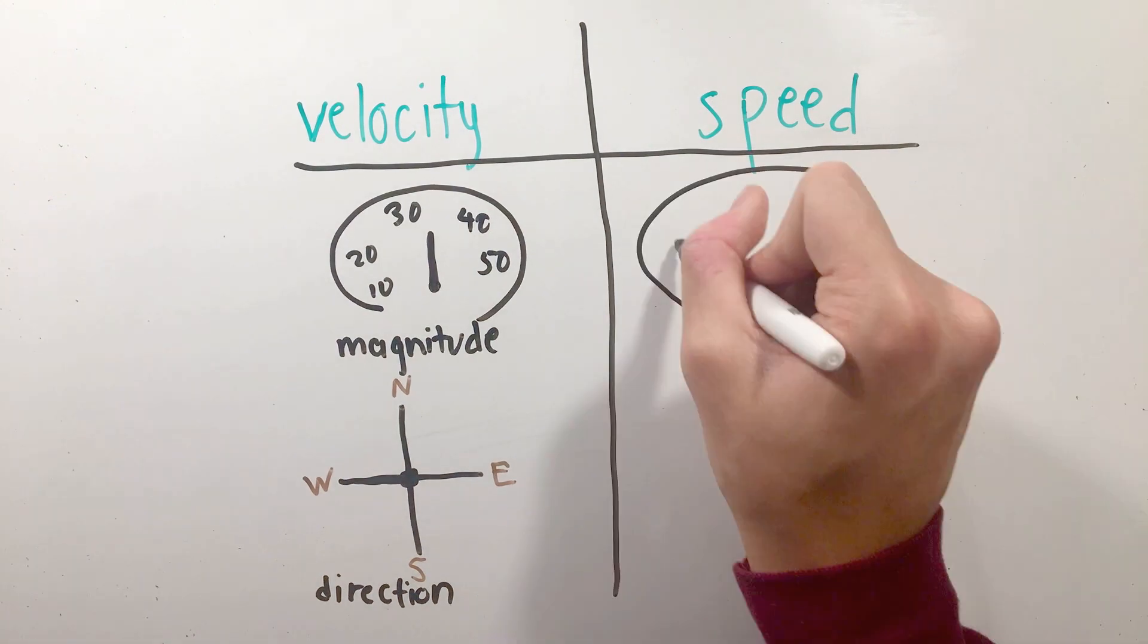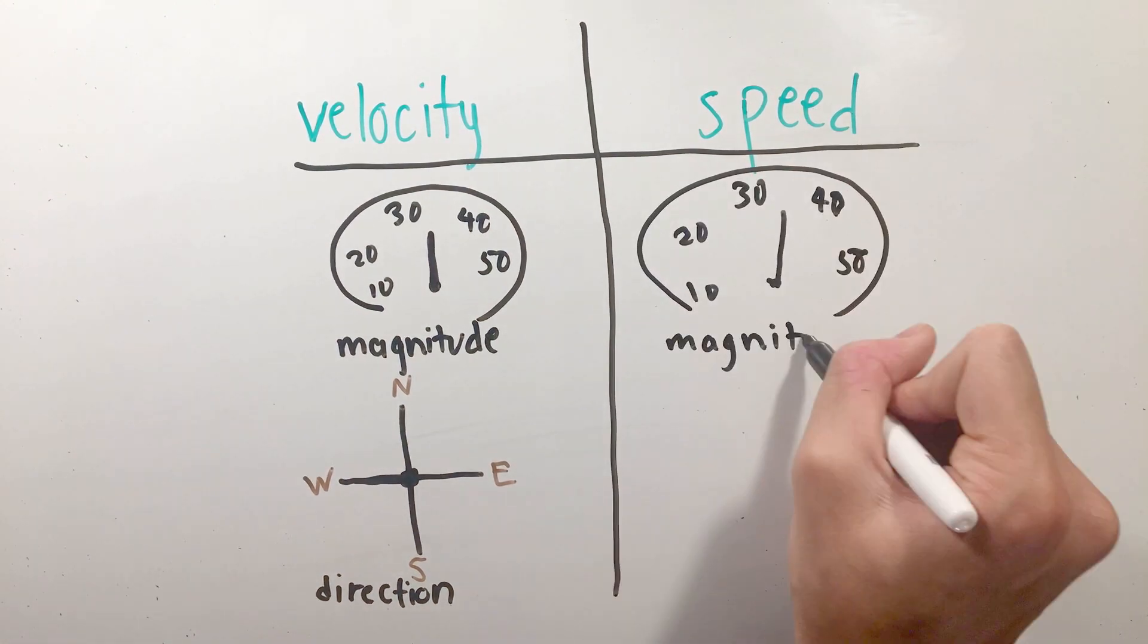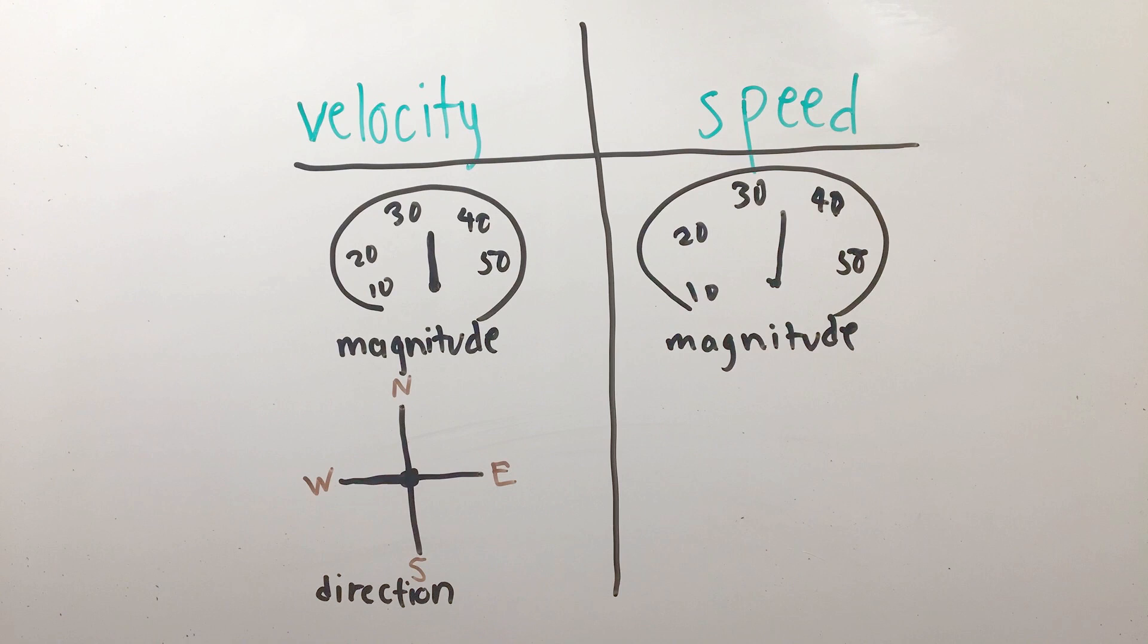On the other hand, the scalar version of velocity, called speed, is defined as the distance traveled over time, and it doesn't describe what direction you're going, only how fast.